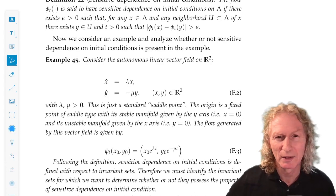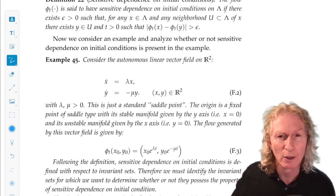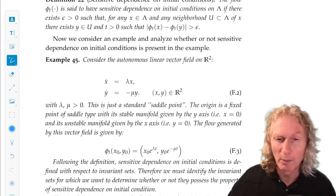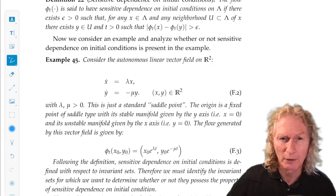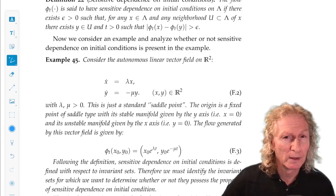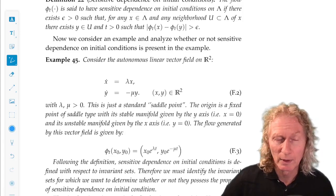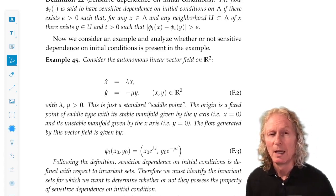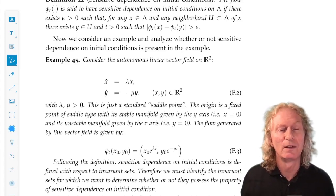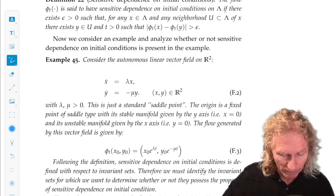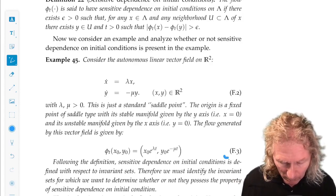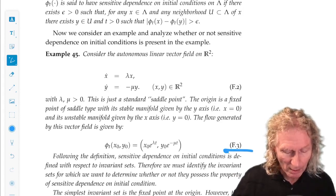And we're going to explore these issues where the core property is sensitive dependence on initial conditions that we're going to start with. Okay. Example 45. The classic saddle point in the plane. Autonomous saddle point. x dot equals lambda x, y dot equals minus mu y. Lambda and mu are positive. So the x-axis is the unstable manifold of the origin. The origin is a hyperbolic fixed point. And the y-axis is the stable manifold of the origin. And we can compute the flow exactly.